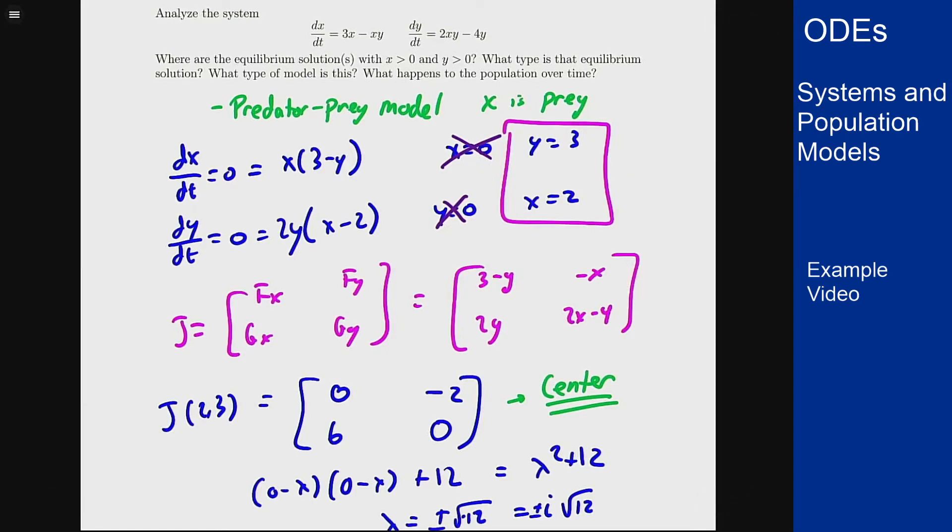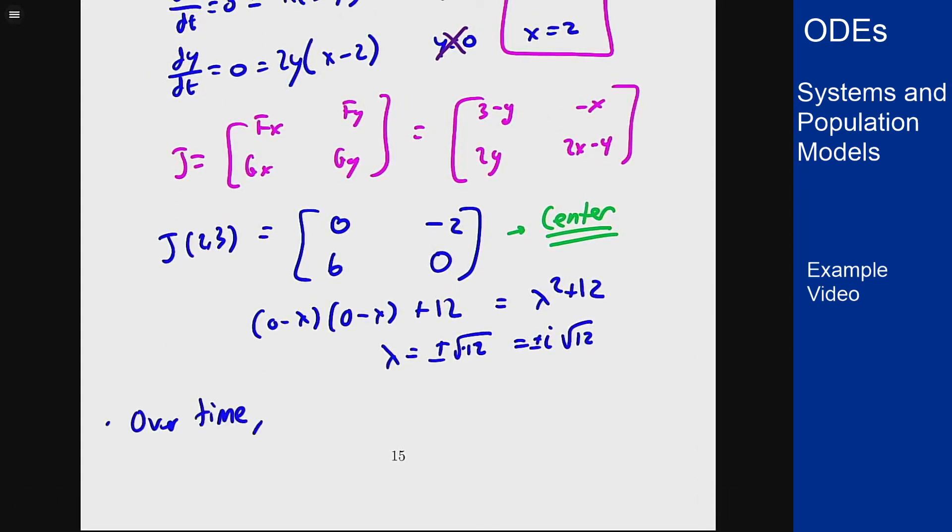Now because it's a center, the nonlinear center doesn't have to actually behave like a center. We know that for predator-prey models of this case, it does actually behave like a center. So we know we're going to get continual oscillation over time for this population. Over time, we'll see these populations of x, y will continue to oscillate, following each other around a cyclical path.